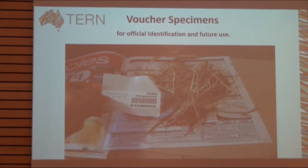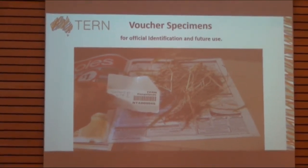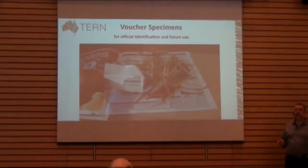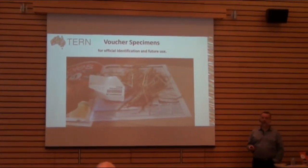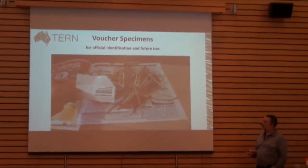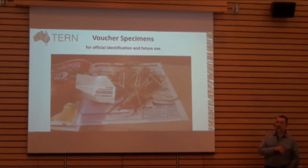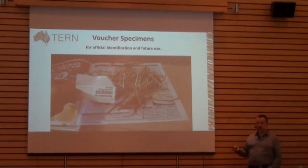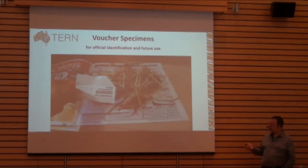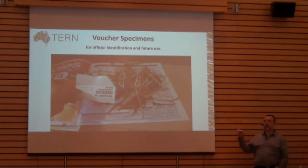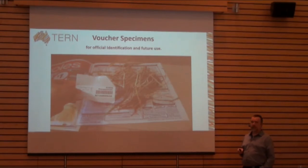We collect samples of every vegetation species that occurs on that plot, barcode them, and store them. They go to a herbaria to be officially identified, and those identifications come back into our database. The herbaria have the right to keep the samples, making them publicly accessible. The real key is that you can go back and look at our historical data and keep its taxonomy up to date — if there are any taxonomic changes, you can go back to the samples and update the data.